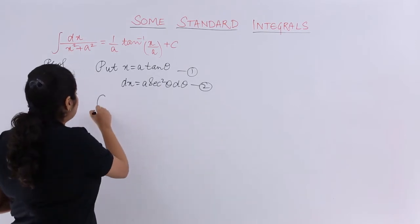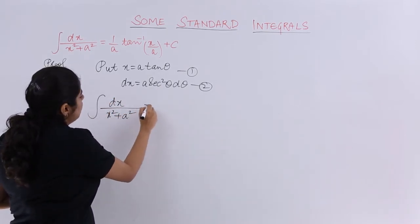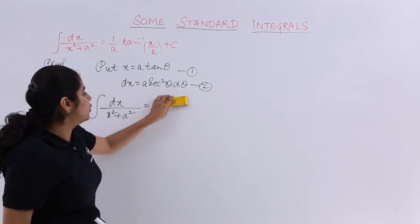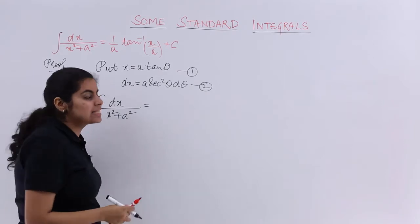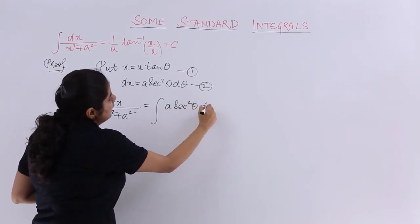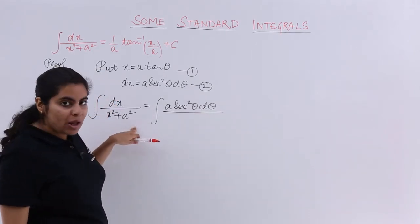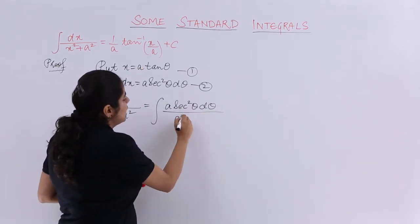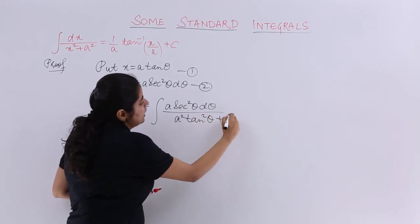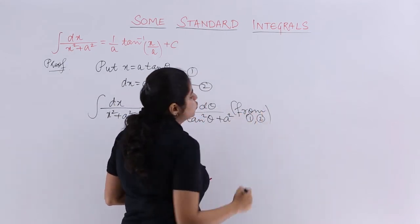Now again let me move back to what I needed to evaluate. It is dx upon x square plus a square, which is dx means the value I need to put for dx in the form of equation number 2 which is a secant square theta d theta, and in the denominator x square plus a square. What is x square? a square tan square theta plus a square, and that is from 1 and 2.